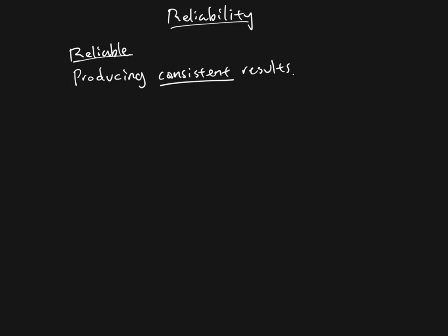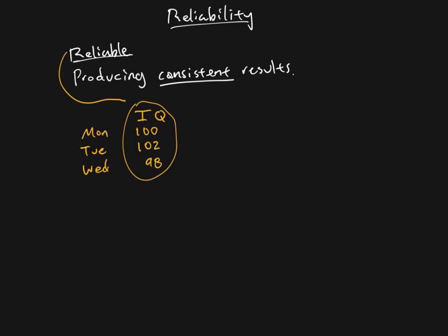Let me give you an example. If we give someone an IQ test on Monday and they score a hundred, and we come back and give them the test on Tuesday, we would not expect a very different score — maybe a hundred and two. And if we come back another day, something similar like 98. This means that this is a reliable measurement for whatever it is it's measuring. To be clear, it doesn't necessarily mean that it's measuring what we want it to measure — it doesn't necessarily mean it's measuring intelligence.